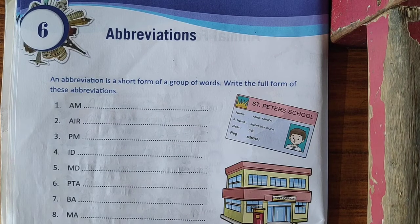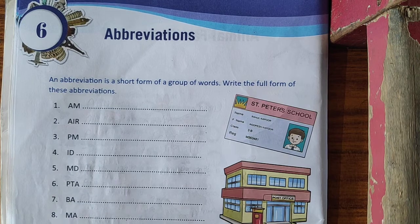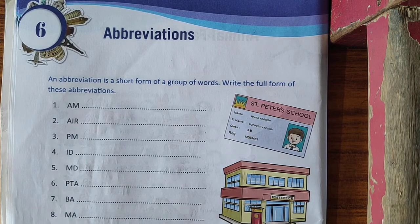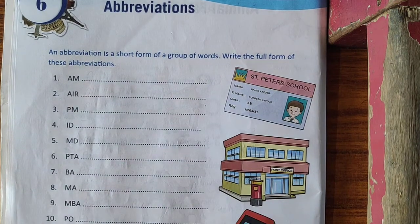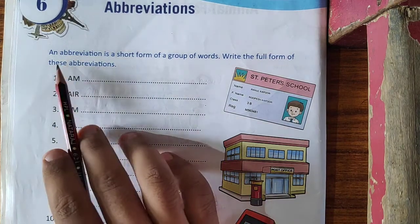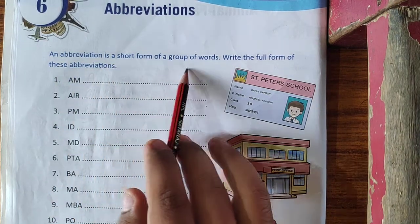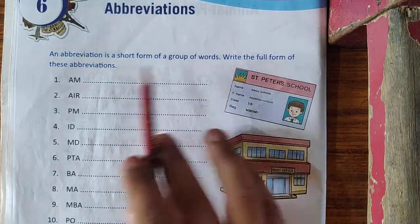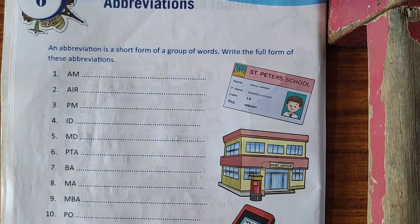Hello students, we are going to discuss chapter number 6, Abbreviations for Standard 3. Some of the following abbreviations are given below, which we will discuss today. An abbreviation is a short form of a group of words. Write the full form of these abbreviations. Let's start.